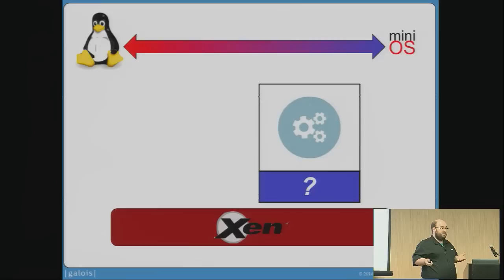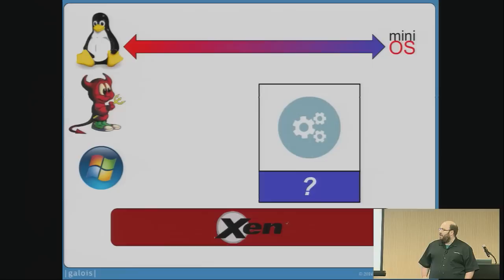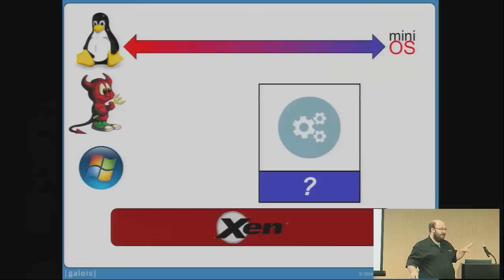If you fast forward from 10 years ago, a couple of years after that, we had support for FreeBSD and we had support for Windows, and that was pretty cool. But I still had this sort of bifurcation. I could either use a full-blown OS that gave me everything I wanted, and much more than I actually wanted, or I could use MiniOS, in which case I had to build everything myself.